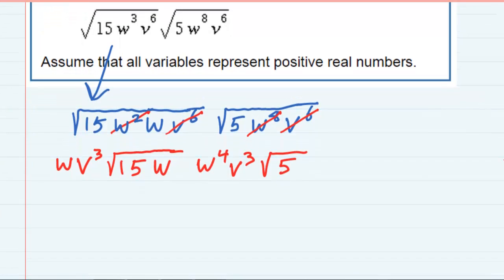So now, if I'm multiplying, I can see that I've got a w and a w to the fourth outside of the radical. I can multiply those and get w to the fifth. I've got a v cubed and a v cubed outside the radical. I can multiply those and get v to the sixth.